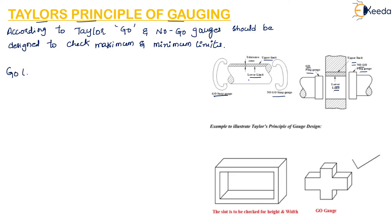How do we check this maximum and minimum material limit? First, let us take the go limit. The go limit is applied to that limit of the two limits of size which corresponds to the maximum material limit consideration. It is the upper limit of the shaft and the lower limit of the hole.